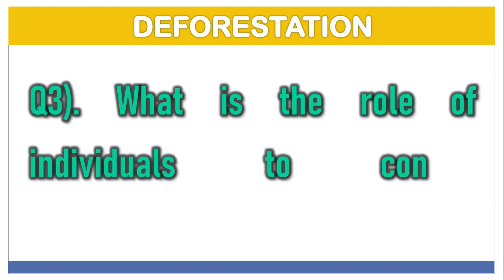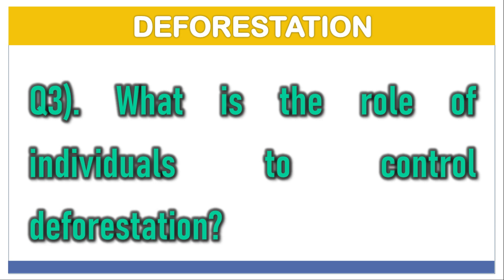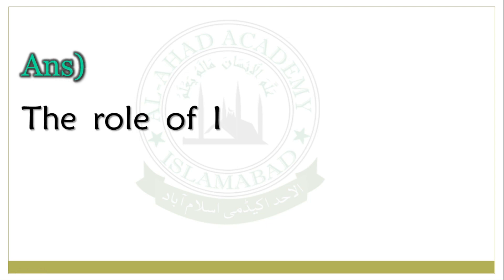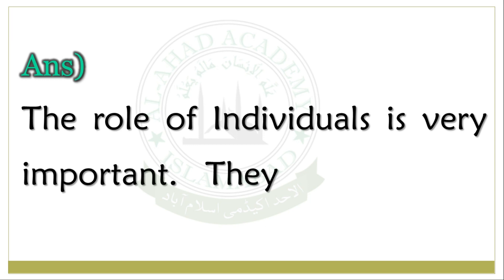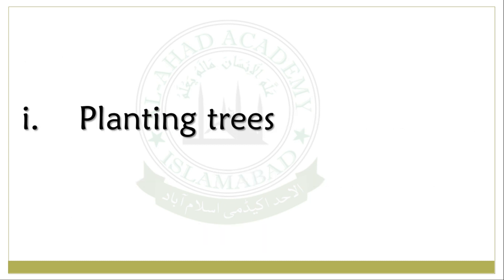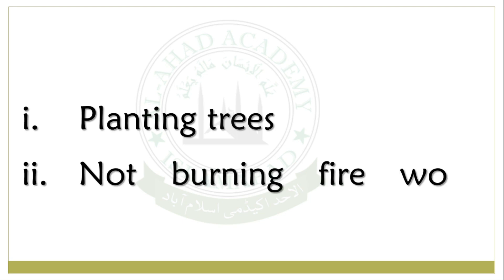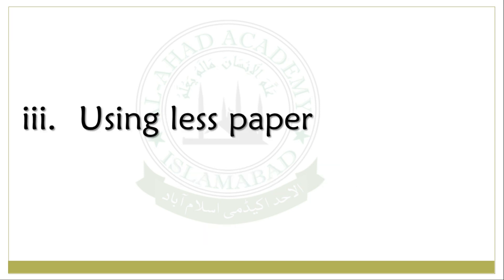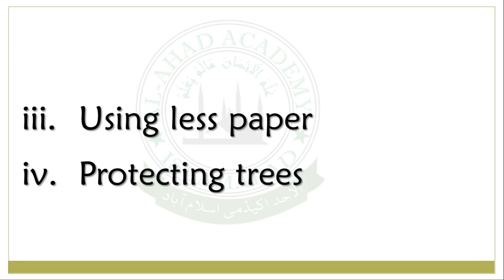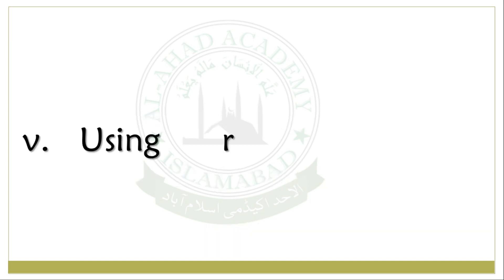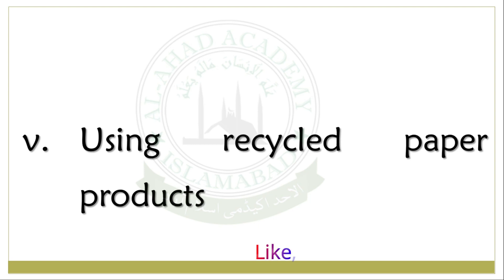Question No. 3: What is the role of individuals to control deforestation? Answer: The role of individuals is very important. They can control deforestation by planting trees, not burning firewood excessively, using less paper, protecting trees and wildlife in their surroundings, and using recycled paper products.